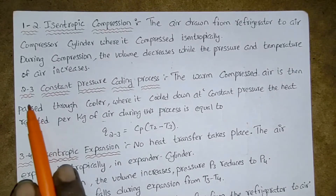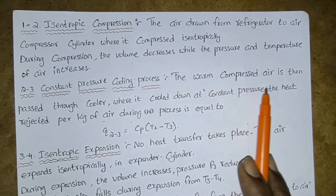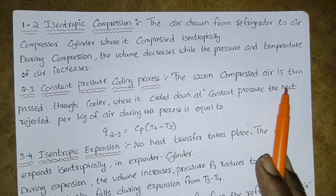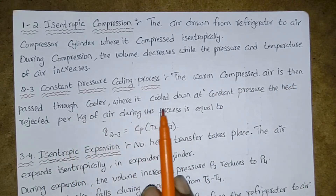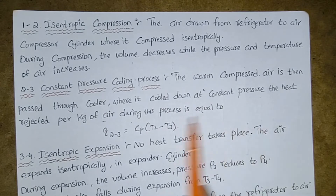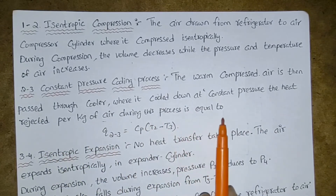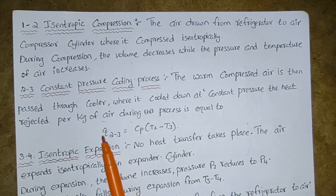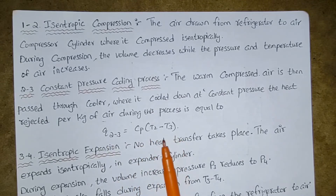Process 2 to 3 — constant pressure cooling process. The warm compressed air is then passed through the cooler where it is cooled down at constant pressure. The heat rejected per kg of air during this process is equal to Q(2→3) = Cp × (T2 − T3).